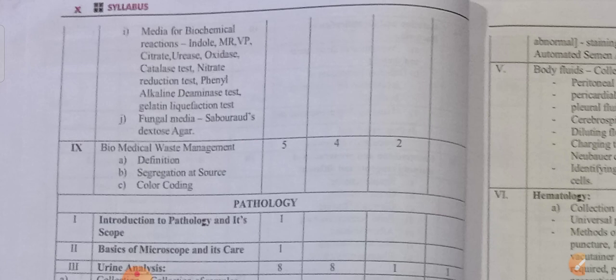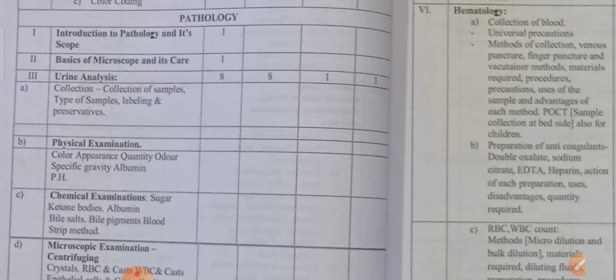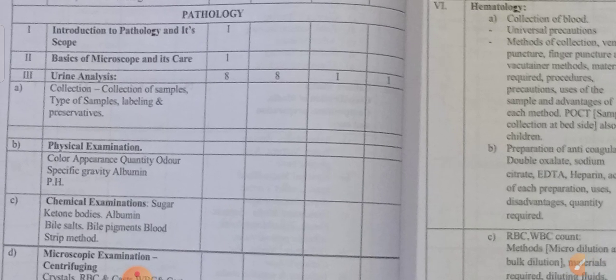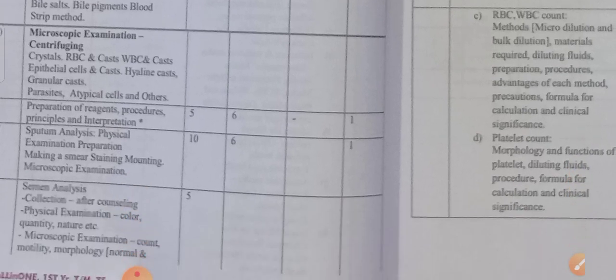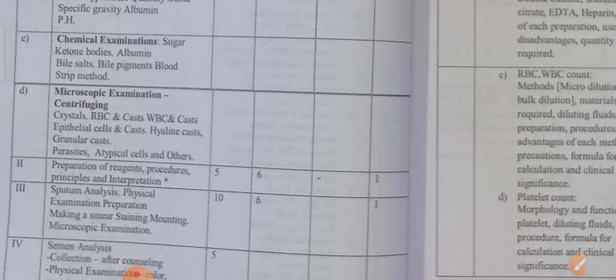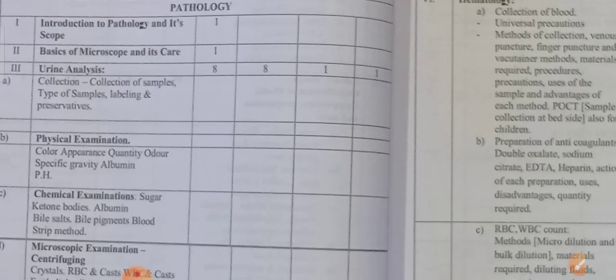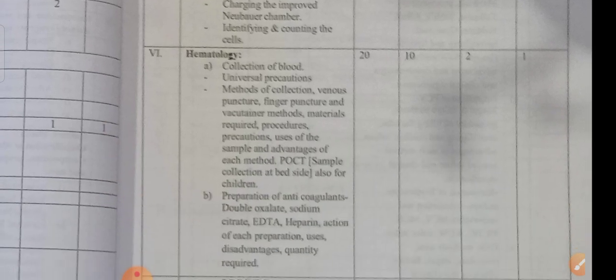Composition and preparation of staining reagents — different, 8 marks weightage. Culture media composition and classification — 8 marks weightage. Coming to pathology, two subjects will come together in one paper without separate booklets. Introduction to pathology — basics of microscope. Urine analysis 8 marks weightage — physical examination, chemical examination, microscopic examination. Serum analysis, semen analysis. Preparation of reagents 6 marks, sputum 6 marks weightage, body fluids 2 marks, hematology 10 marks.